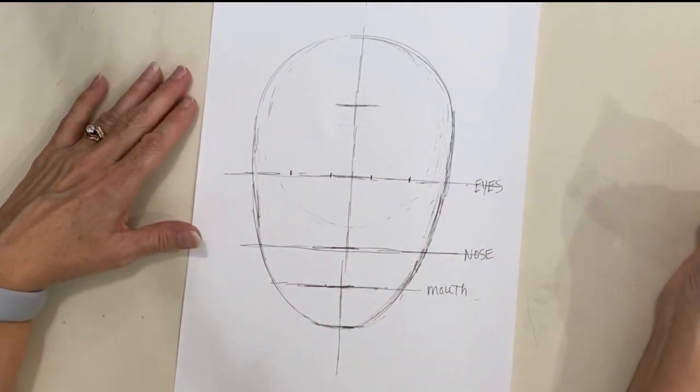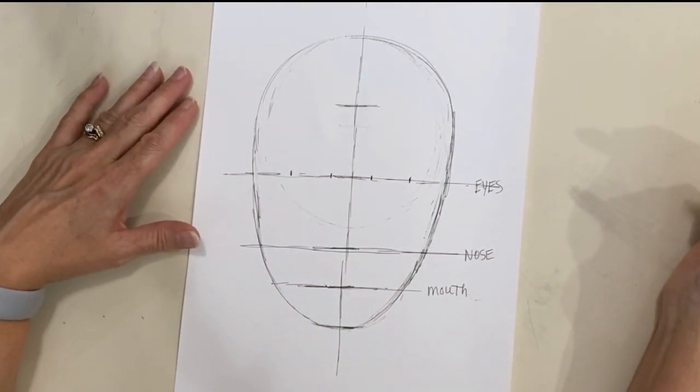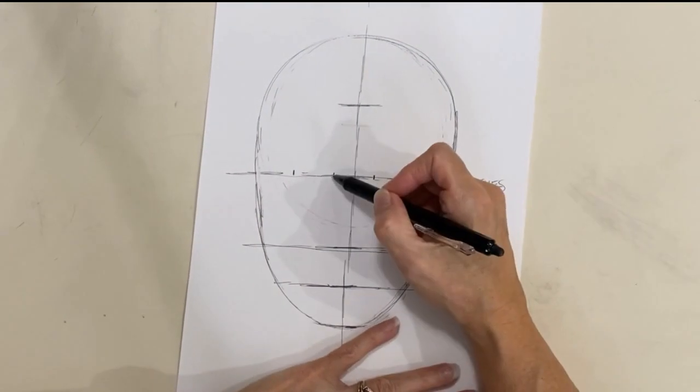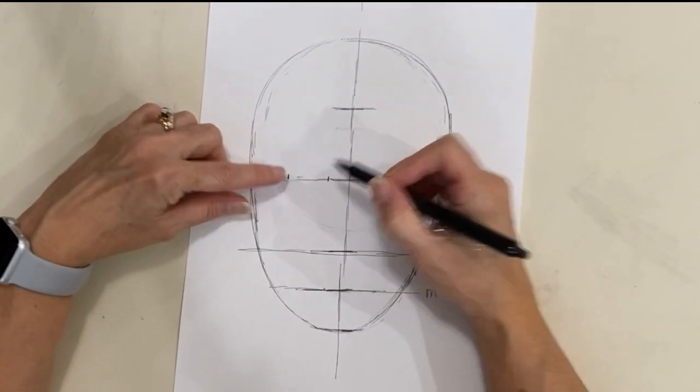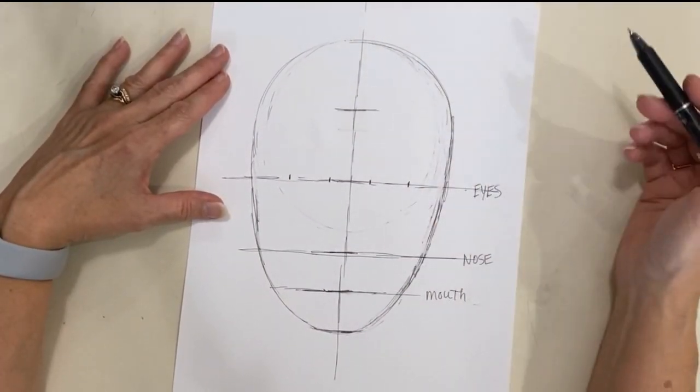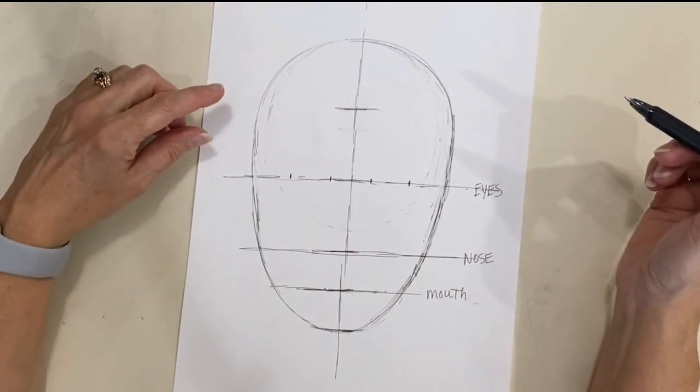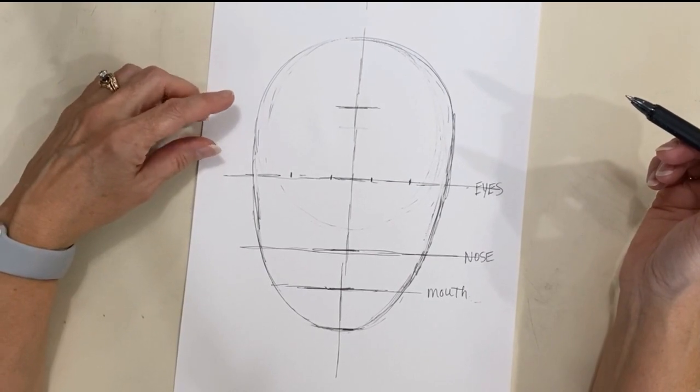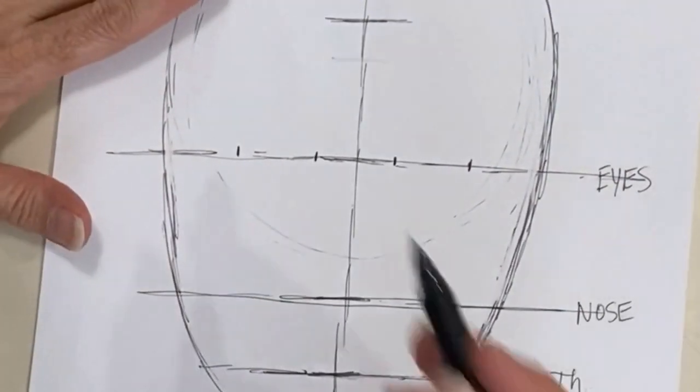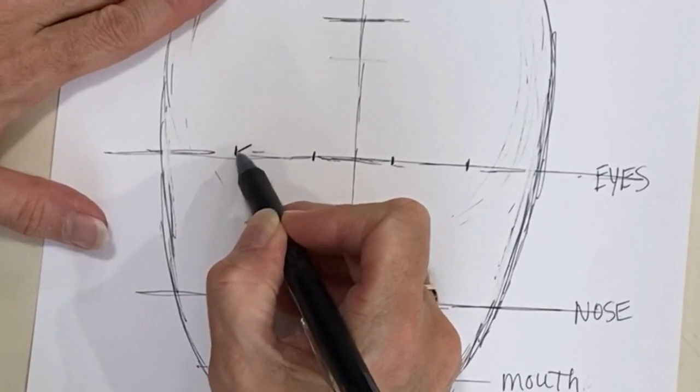So we have one, two, three, four, five spaces across your face in between. Now what's very important is these marks on this center line is going to be exactly where the two sides of your eyelids are going to come to a point. So be very careful that you start on that line right at those dots.